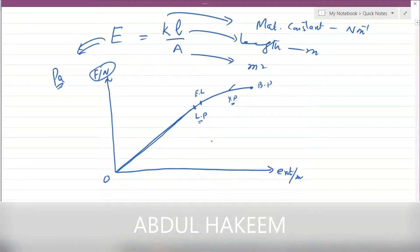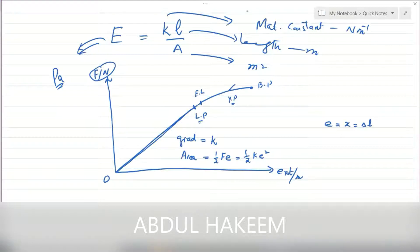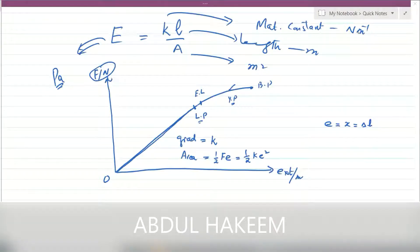The gradient of the straight line is the material constant, and the area under the graph equals the strain energy, which is one-half F times extension, also written as one-half k times extension squared. Extension can also be written as x or delta L.